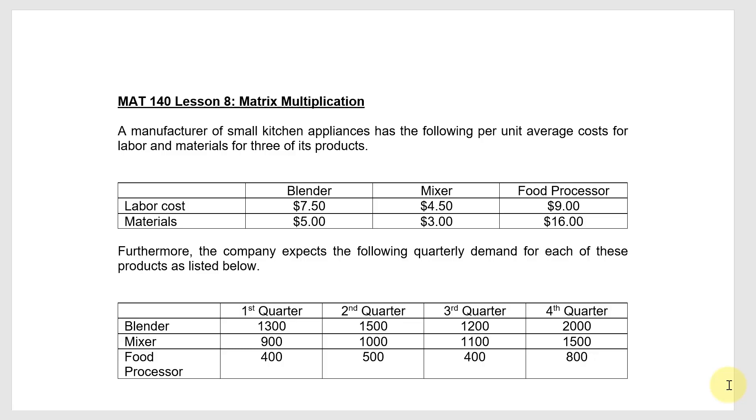This is the MAT 140 lesson number 8 on matrix multiplication. A manufacturer of small kitchen appliances has the following per unit average cost for labor and materials for three of its products.